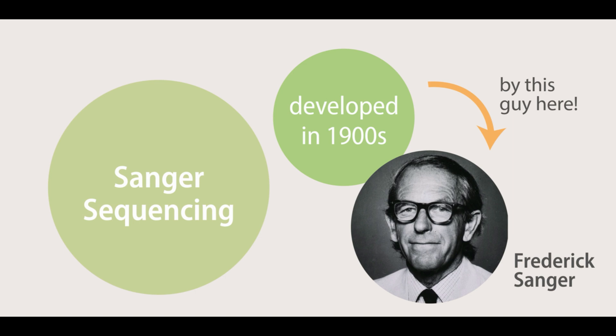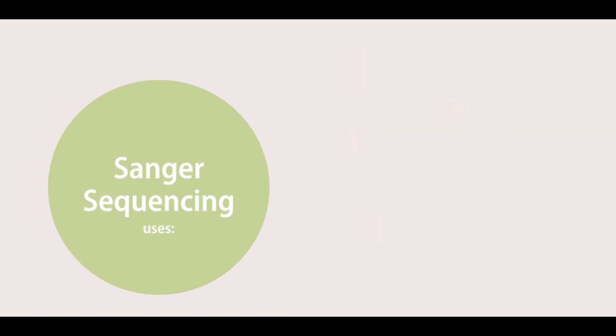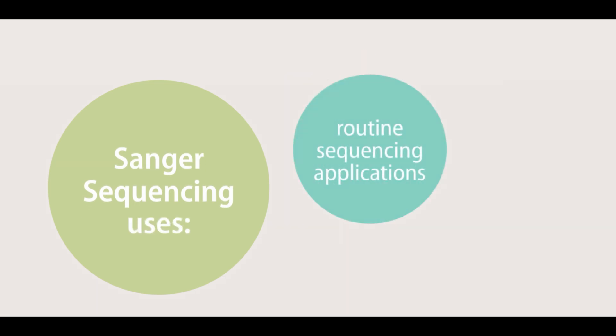Sanger Sequencing, first developed in the 1900s, is the gold standard for DNA sequencing and it is still used today extensively for routine sequencing applications and to validate NGS data.